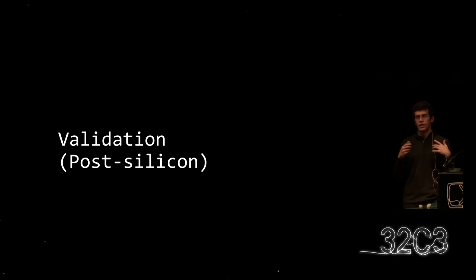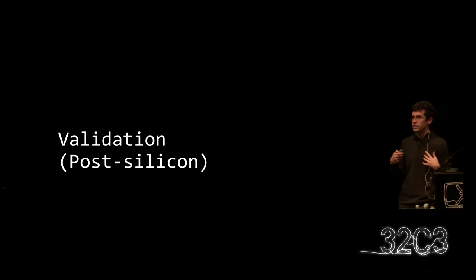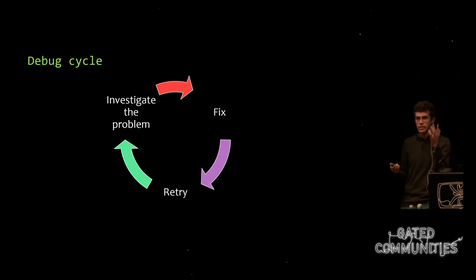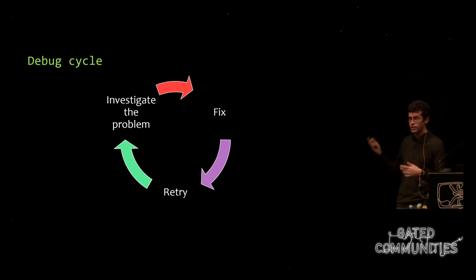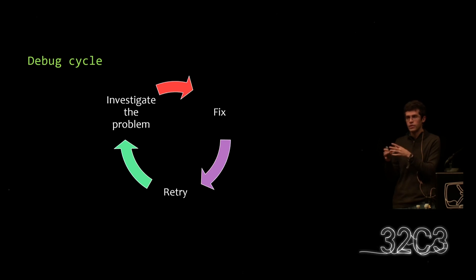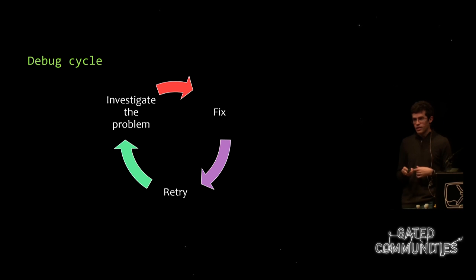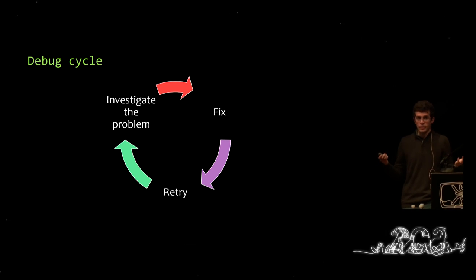The next thing I want to talk about is what is done after the silicon comes back. You get your silicon back from the fab, and it's not going to work perfectly, and you have to debug it. With software you investigate the problem, run GDB, do some printf, figure out what you did wrong, fix the code, recompile — and that's all great. With hardware, it doesn't quite work like that. One common way of figuring out what happened in the design is to use something called a JTAG interface.